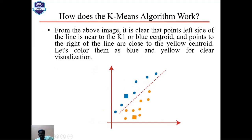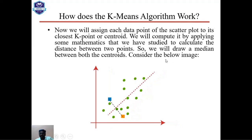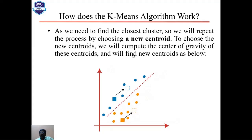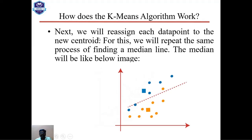From the image, it is clear that points on the left side of the median line are nearer to K1, the blue centroid, and points on the right side are closer to the yellow centroid. We color them blue and yellow for clear visualization. To find the closest cluster, we repeat the process by choosing a new centroid — computing the center of gravity — and reassign each data point to the new centroid by drawing a new median line.